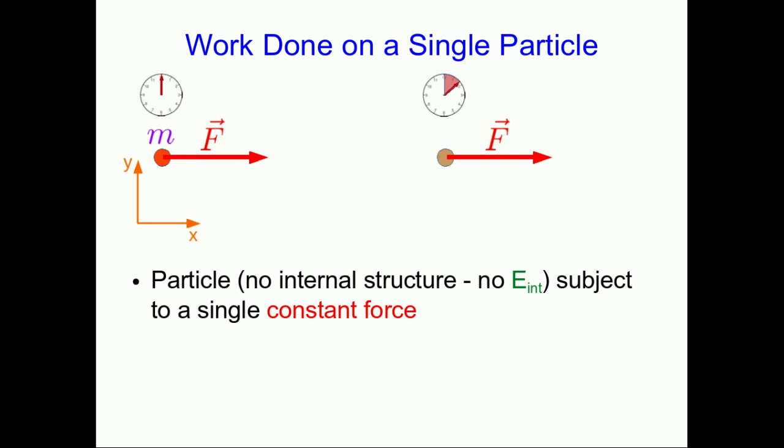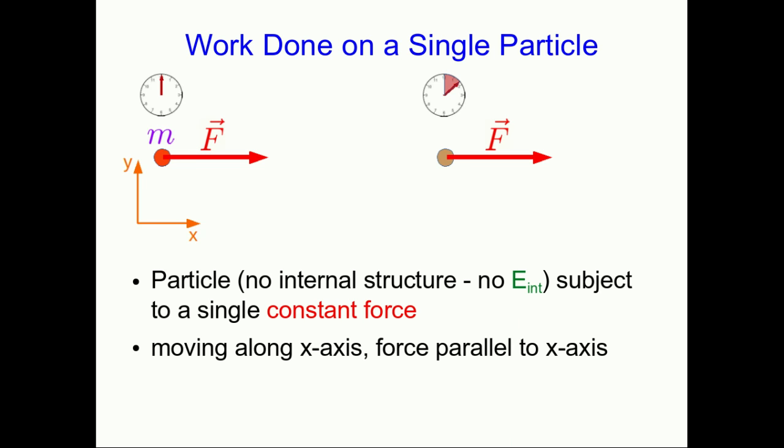To learn to calculate work, we're going to start with the simplest situation possible: a particle, which has no internal structure, and so there's no possibility of changes to its internal energy, and it's subject to a single constant force. This particle is moving along the x-axis, with a force acting on it parallel to the x-axis. This may seem like an extreme idealization, only of interest to particle physicists, but actually it's a good approximation quite often for fairly rigid objects.